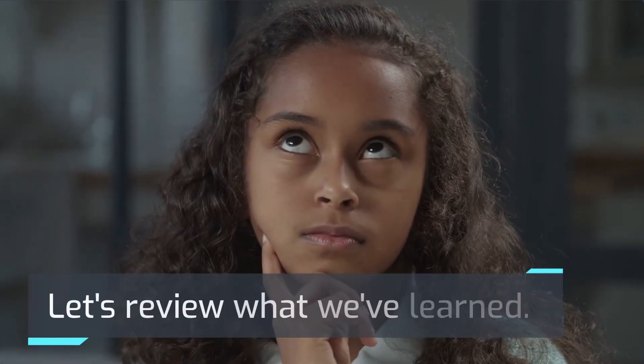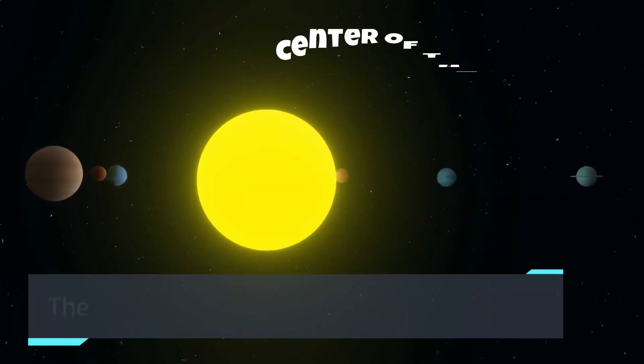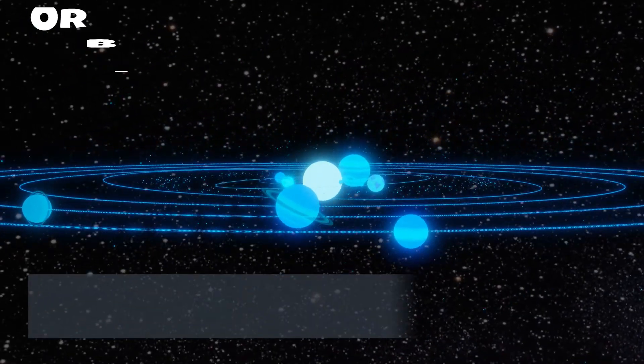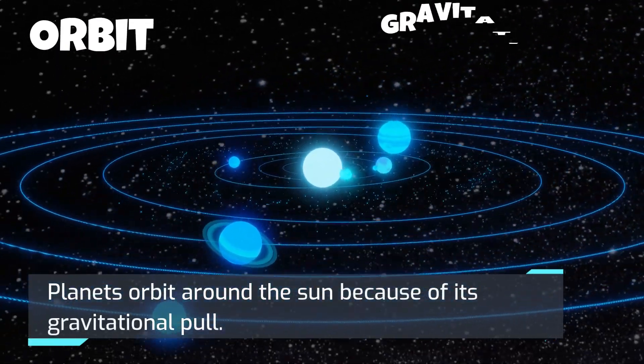Let's review what we've learned. The Sun is the center of the solar system. Planets orbit around the Sun because of its gravitational pull.